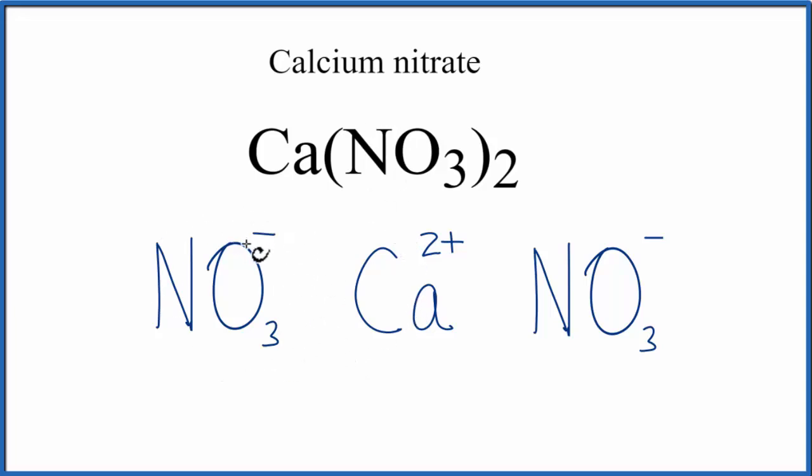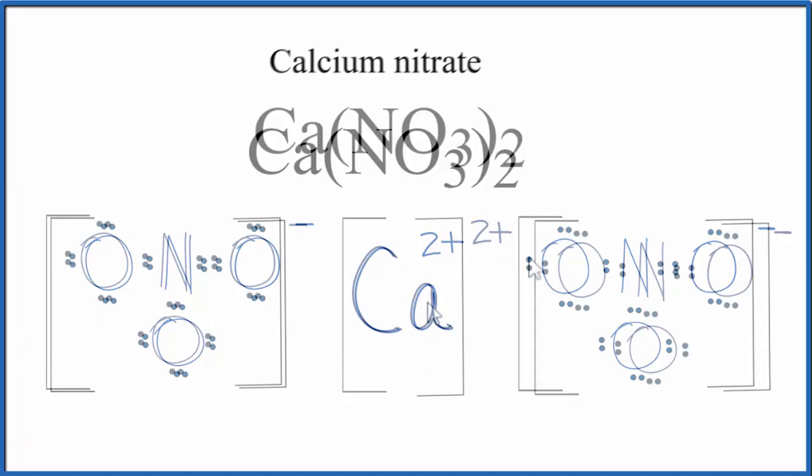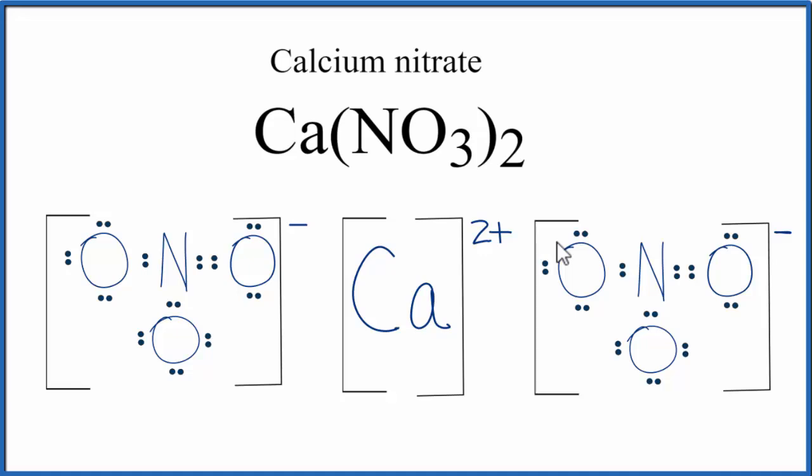Let's replace the NO3 minus, called the nitrate ion, with the Lewis structure. We should put brackets around each of the nitrate ions, and often you'll see brackets around the calcium ion. And that makes this the Lewis structure for calcium nitrate.